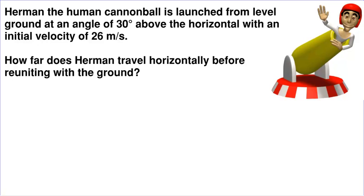Let's take a look at some projectile motion problems in which the object is launched at an angle. In our first problem, Herman the human cannonball is launched from level ground at an angle of 30 degrees above the horizontal with an initial velocity of 26 meters per second. How far does Herman travel horizontally before reuniting with the ground? Sounds like a great career option to me.